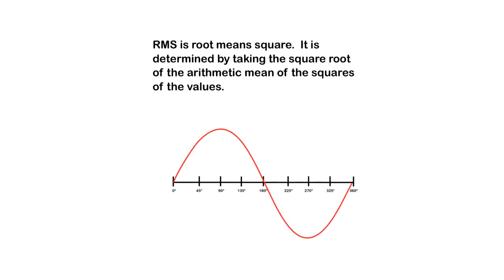So RMS, you'll hear, is root mean square. It is determined by taking the square root of the arithmetic mean of the squares of the values. That's a lot of fancy stuff to say. Go Google it if you're totally wanting to know more about what RMS is. For our purposes here, we're just trying to figure out a little bit about the arithmetic cycle in this waveform.